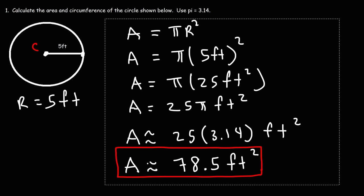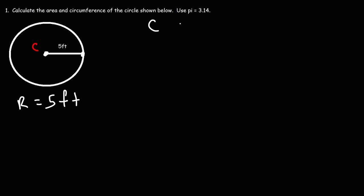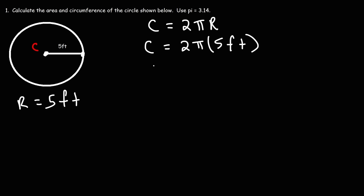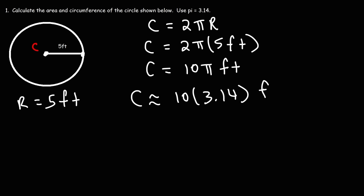Now let's calculate the circumference of the circle. We're going to use the formula C is equal to 2 pi R. The exact value is 2 pi times 5 feet, which is 10 pi feet. Replacing pi with 3.14, we get 10 times 3.14, which is 31.4 feet. Notice that the unit for circumference is in feet, the same as the unit for radius, but the unit for area is in square feet.